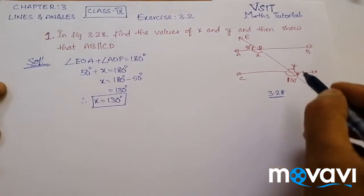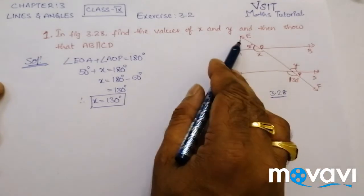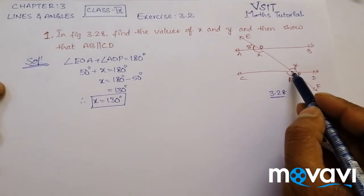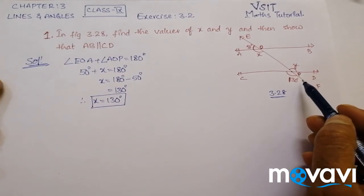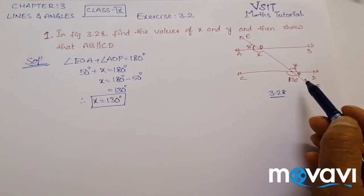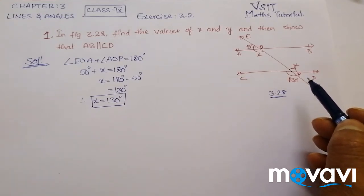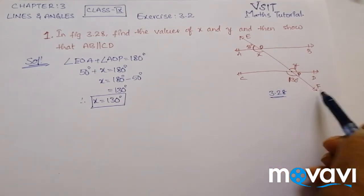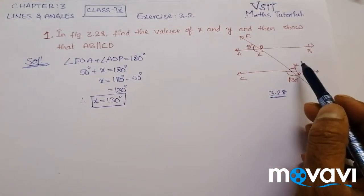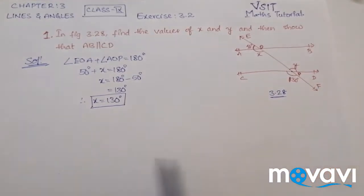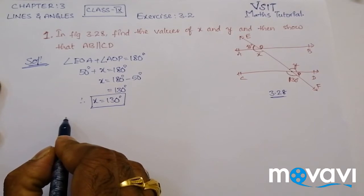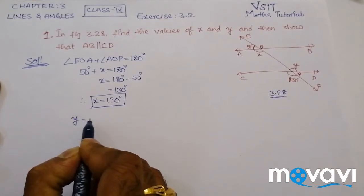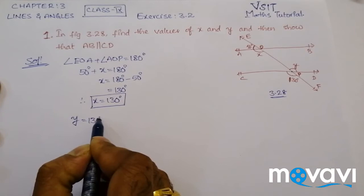Now, coming to the next point, EF and CD are intersecting at point P. We know that if two lines intersect at a point, then they form vertically opposite angles which are equal. Here, angle OPD and angle CPF are vertically opposite angles, so directly we can write that Y is equal to 130 degrees.